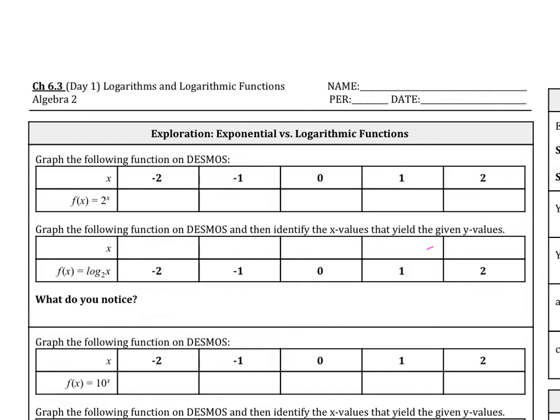Let's fill in these values first. We know 2 to the 0 is 1, 2 to the 1st power is 2, 2 squared is 4, and then we know 2 to the negative 1, that means it becomes a reciprocal, which is 1 half, and then 2 to the negative 2 would be 1 to the 4th power.